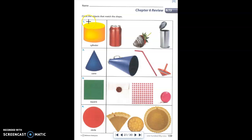For the first set of activities, numbers 1 through 4, we're going to circle the objects that match the shape. They give us a shape. Some of these shapes are 3D, like the cylinder and the cone, and some of them are 2D, like the square and the circle.